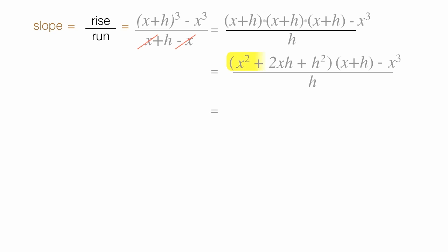If I multiply these two together, I get x cubed plus 3x squared h plus 3xh squared plus h cubed. That's hard to say. Now I'll subtract off x cubed. Notice that this x cubed and this x cubed cancel each other out.